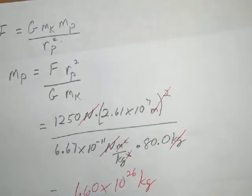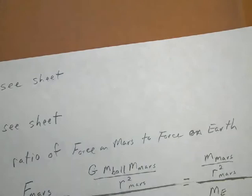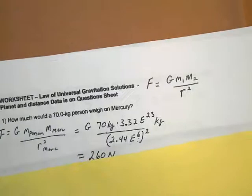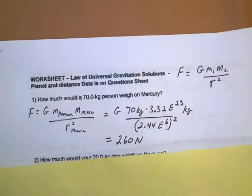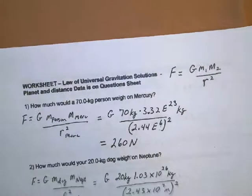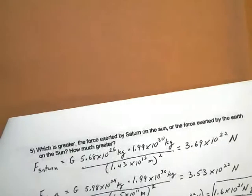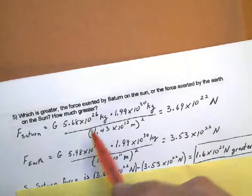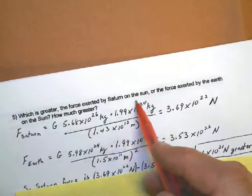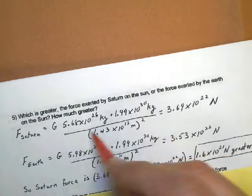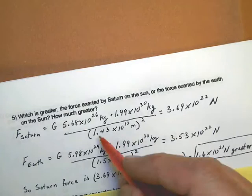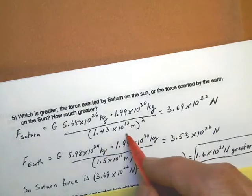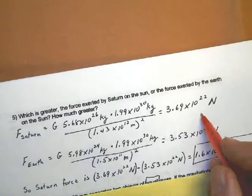For number 5, you do just like you did for number 1 and 2, to find the force exerted by Saturn on the Sun. So we'd have the mass of Saturn, the mass of the Sun, divided by the distance between Saturn and the Sun. You get this many newtons.